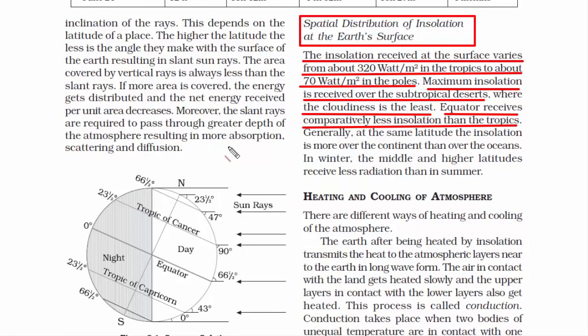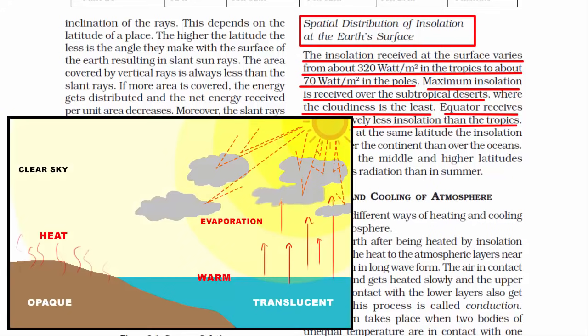Always remember: the sky over the oceans is typically covered by clouds, whereas on land that's not the case. Only if a landmass is closer to an ocean or sea does it have a cloudy sky. If you remember this point, you will easily figure out which place is cloudy and which is not. And the last point is that insolation is more over the continent than over the oceans.